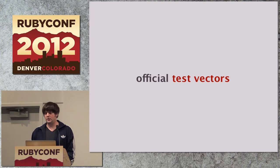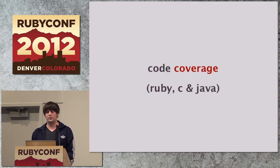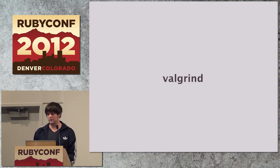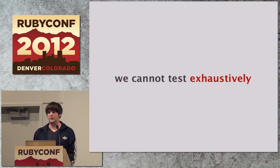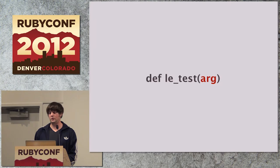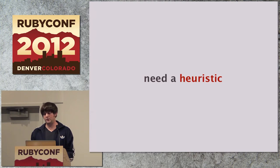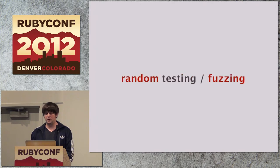What I do is I have the usual suspects: I try to include official test vectors, I do code coverage not only for Ruby but also for C and Java code, it's on Travis of course, and for C I use Valgrind to find memory leaks. But the problem with testing is that we cannot test exhaustively — it's an exponentially hard problem. Even with the most simple methods, if arc could only take on integer values, we still couldn't test exhaustively because there are infinitely many integers. So what we need is a heuristic — something that covers a lot of ground while not taking up too much time.